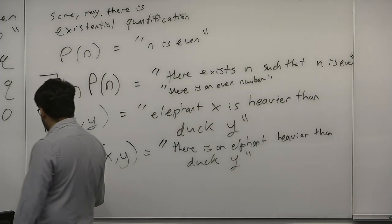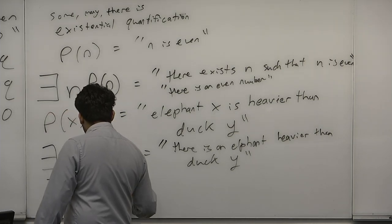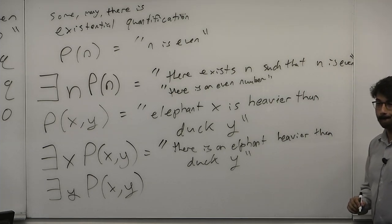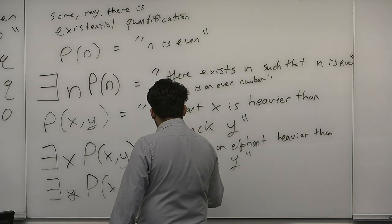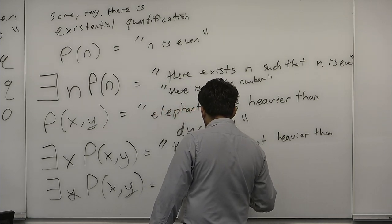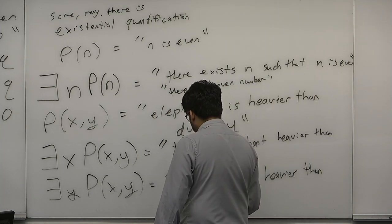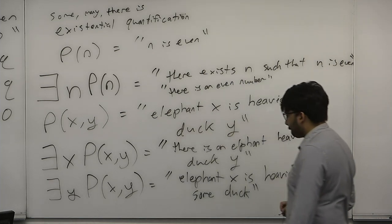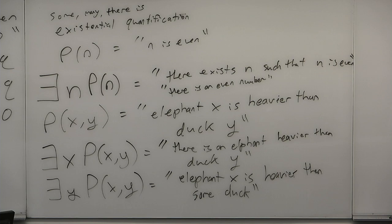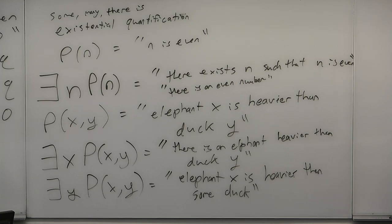What about 'there exists Y, P(X, Y)' in English? 'Elephant X is heavier than some duck.' For what X would that be true or not true? It could be true if you could find one duck lighter than the heaviest elephant. Even with the lightest elephant and the heaviest duck it would probably still be true. But suppose there's one duck heavier than the smallest elephant — then it might be false.